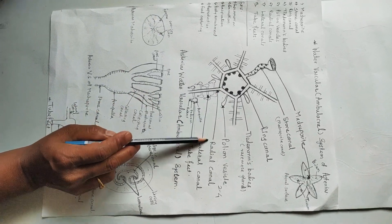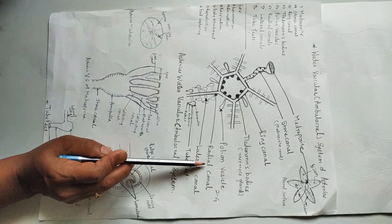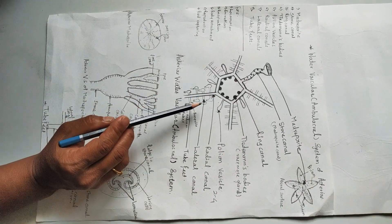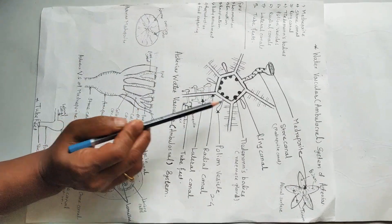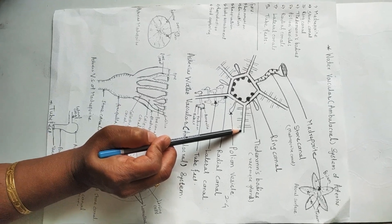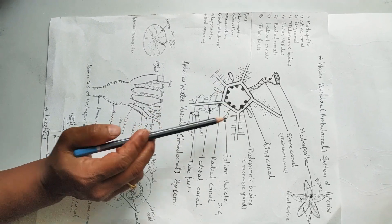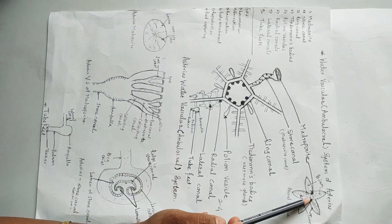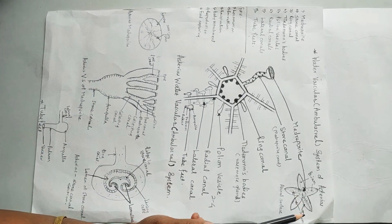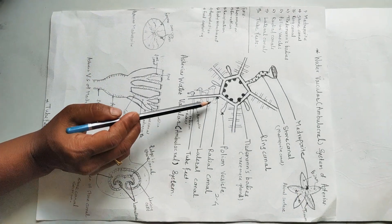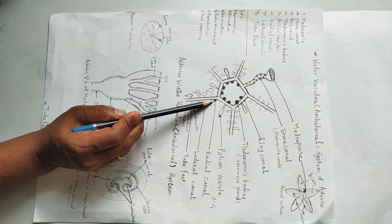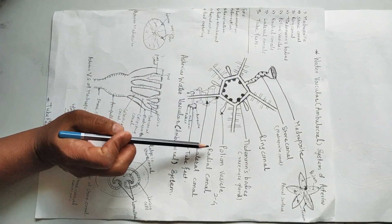Next part is the radial canal. Ring canal from its border at five corners gives out five radial canals. The radial canal runs up to the tip of the arm. From each side of the radial canal arises the lateral canal.